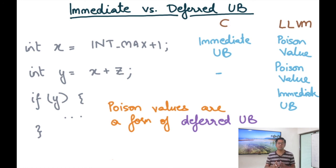And so this terminology helps us understand the motivation and the operations of these weaker forms of UB, like poison values, because by using the word deferred, you're basically explicitly saying what's really happening in this particular case.